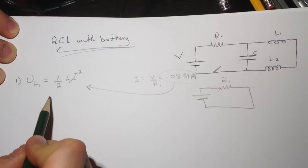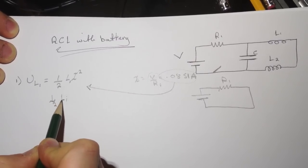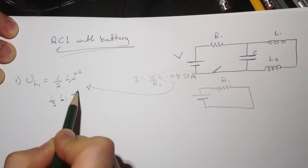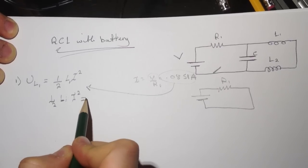Then we plug this value back into here, so it's half, and then the value of L1, and then we square the I. And I got this to be 0.00134 joules.